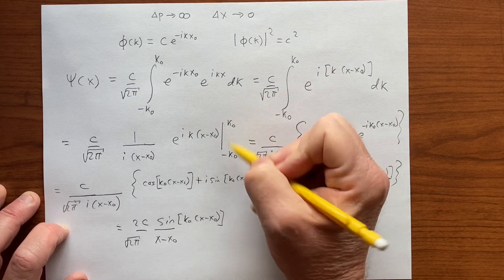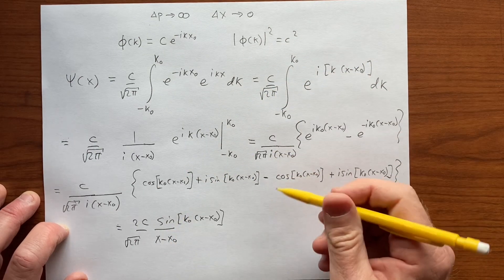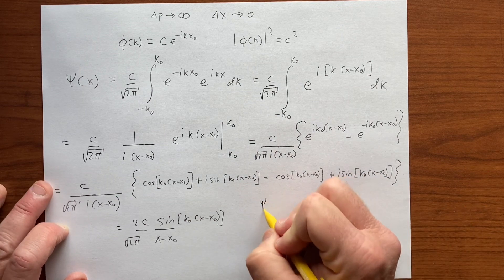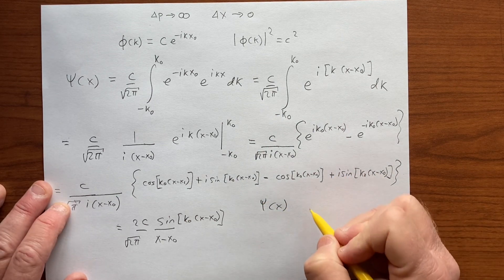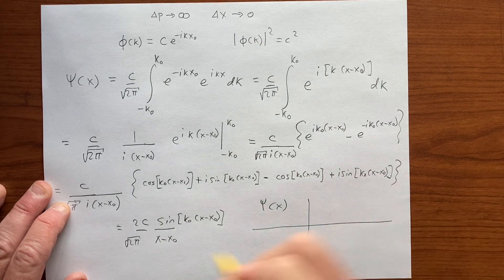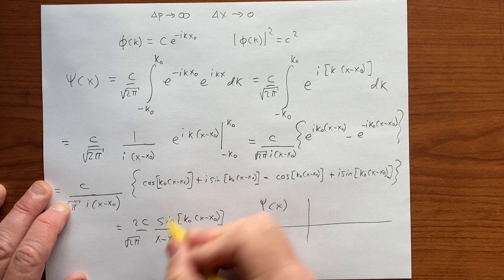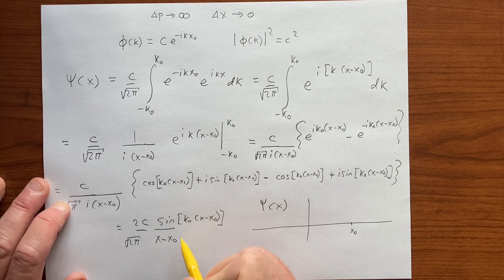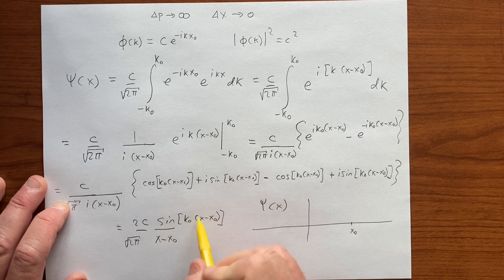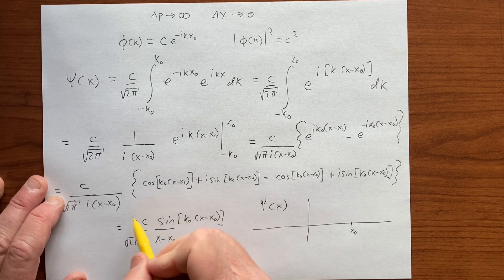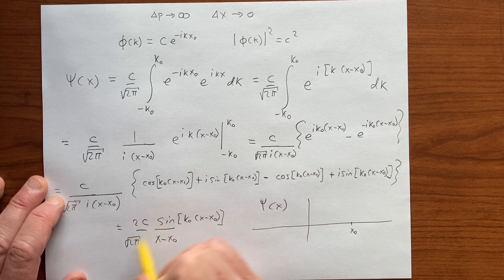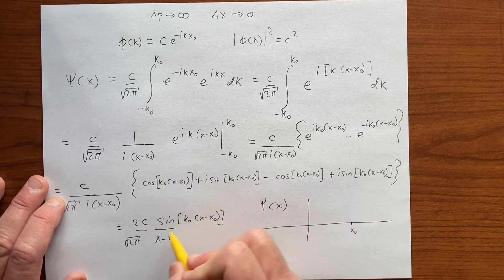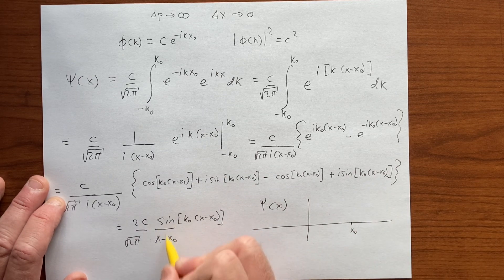K₀ is a large number, we're going from minus some large number to some positive large number. If we plot psi of x, at x equals x₀ this denominator goes to zero, so it's going to infinity. The sine goes from minus this amplitude to plus this amplitude. When we approach x₀, this is skyrocketing, going to infinity.